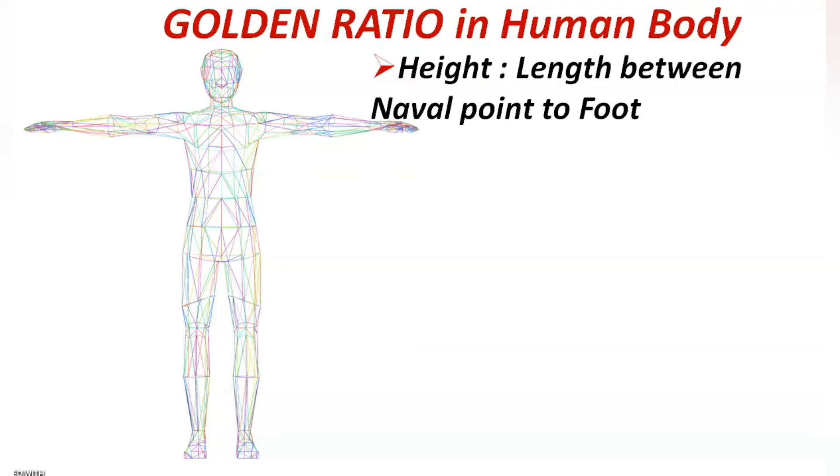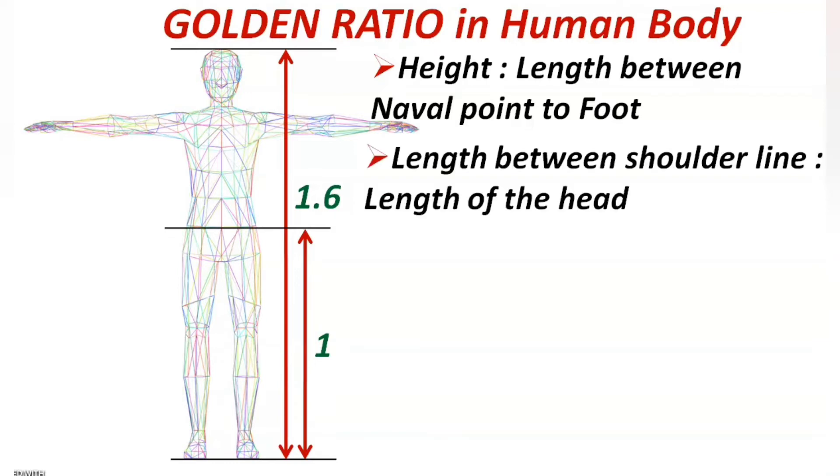If the total height of the person is 1.6 units, then the length between navel point to foot will be one unit. Similarly, next another ratio: length between shoulder line to length of the head.